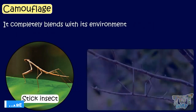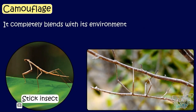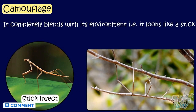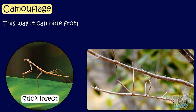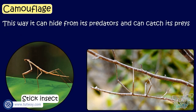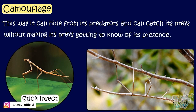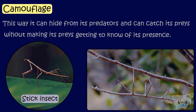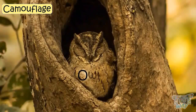This is a stick insect. It completely blends with its environment — it looks like a stick itself. This way it can hide from its predators and can catch its prey without its prey getting to know of its presence.